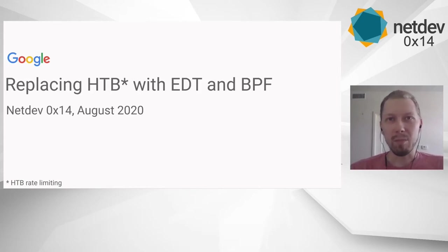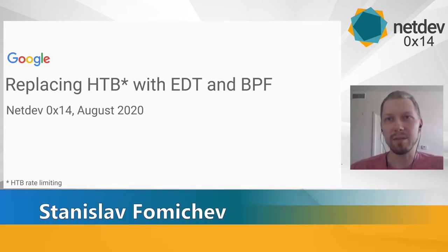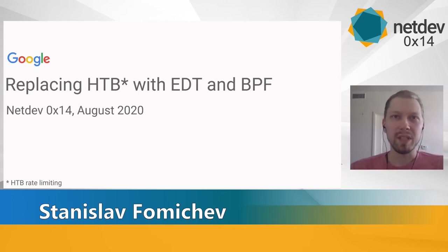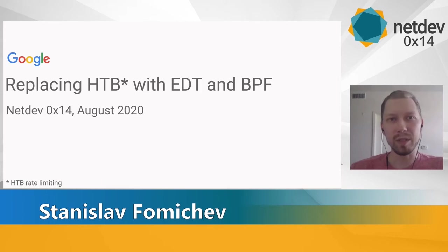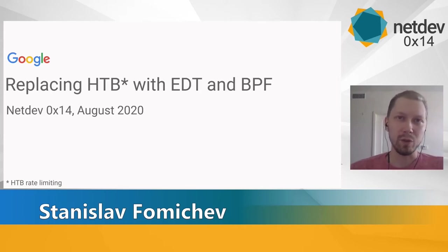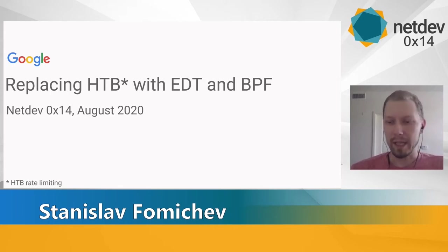Today I'm going to talk about how and why we've removed the HTB queuing discipline and replaced it with a solution based on BPF and EDT. One important note is that we didn't really set a goal to fully reproduce all HTB features. Even though it's probably possible, we didn't do it because we didn't use all the features internally. So we focused only on rate limiting, the only feature from HTB that we were using. This is also a joint work involving multiple people and teams, and I will list them all at the end of the talk.